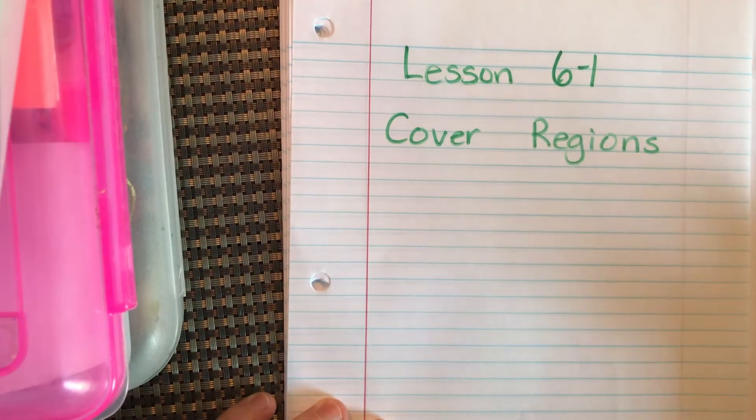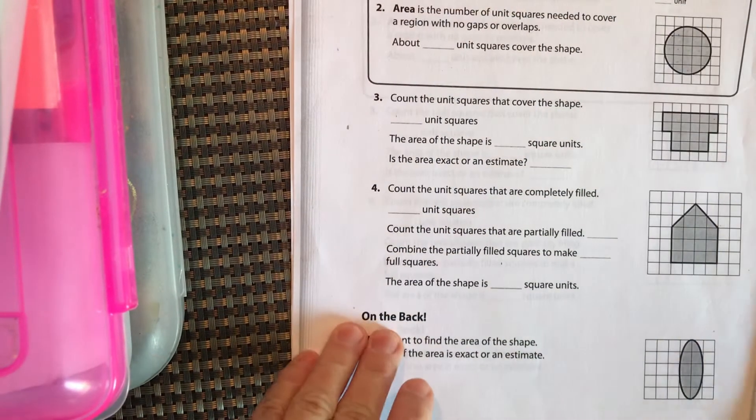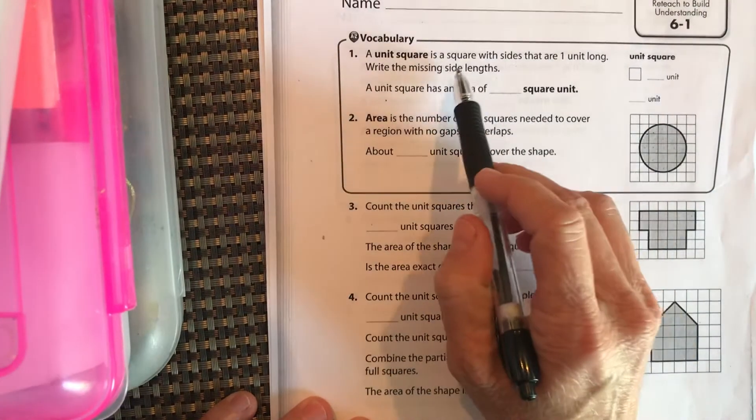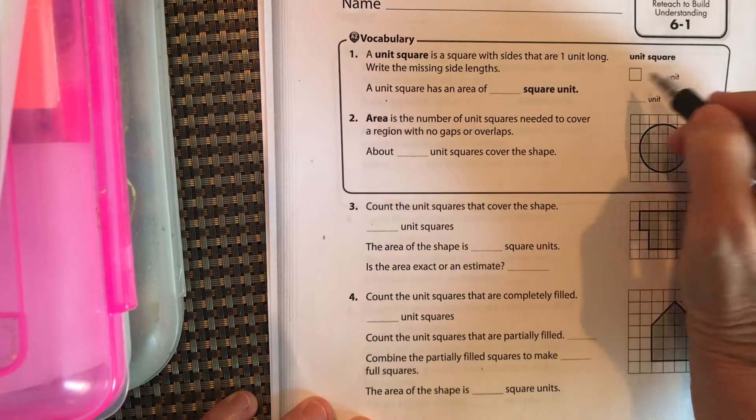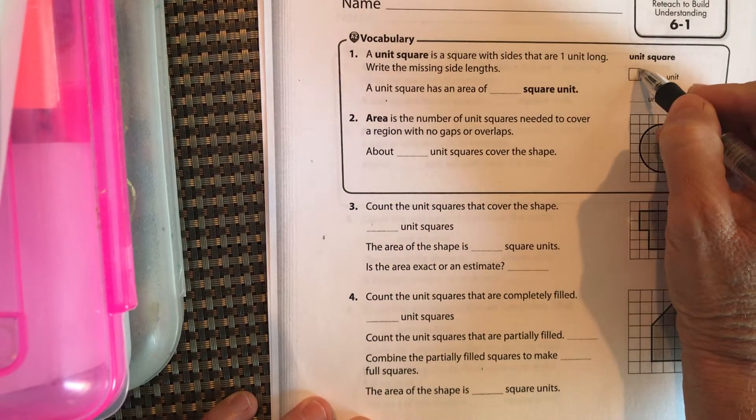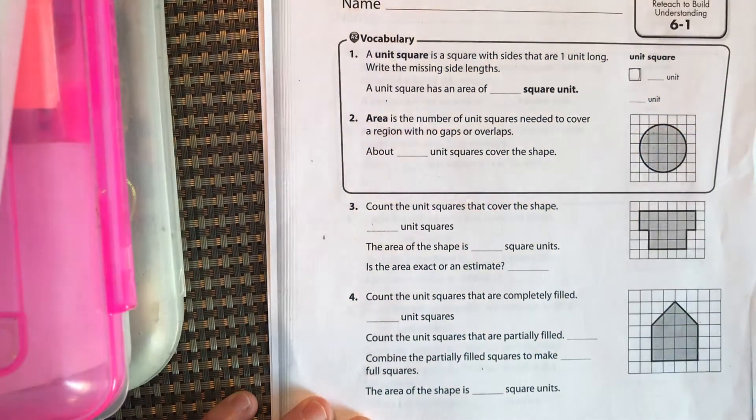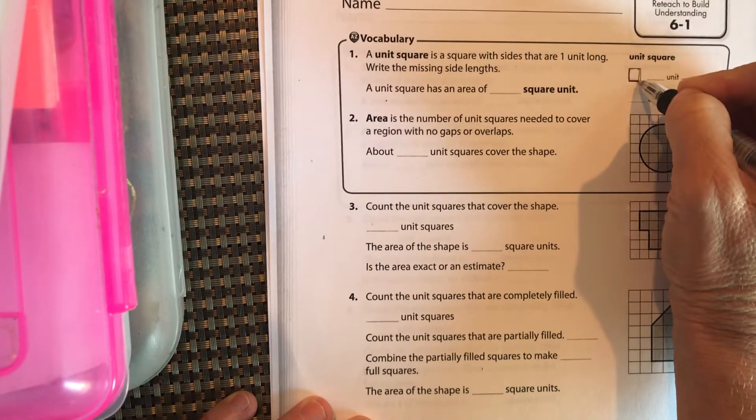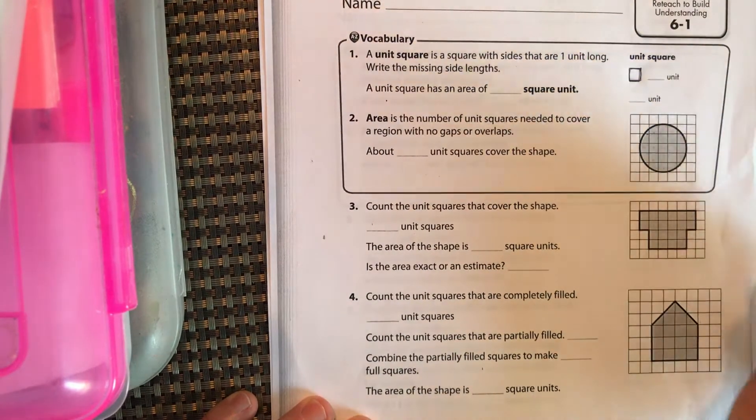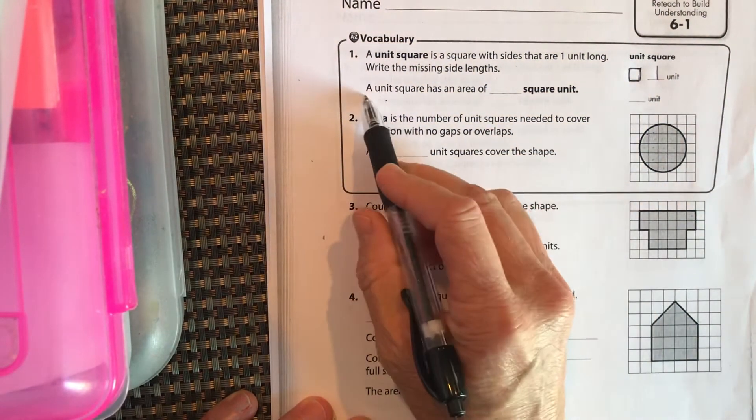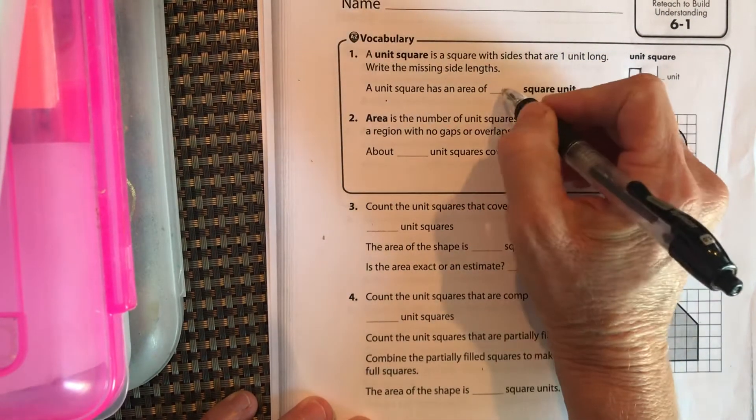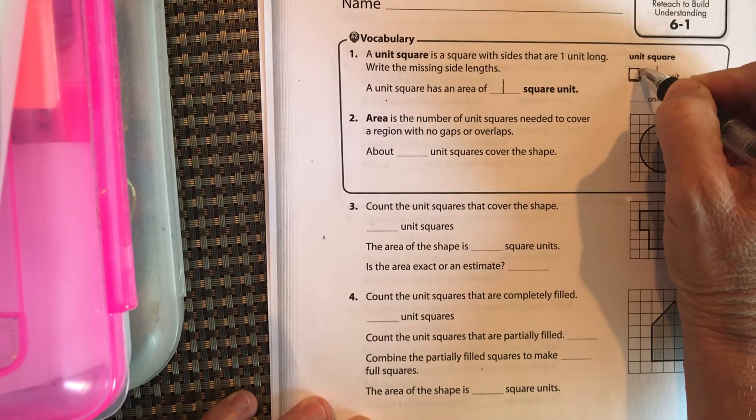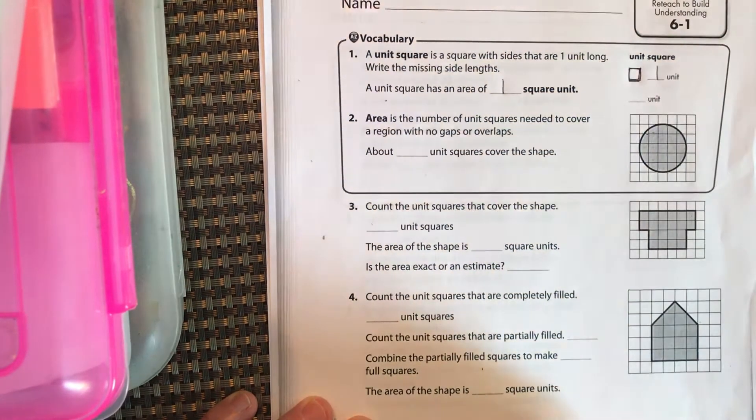Okay, lesson 6-1, cover regions. So a unit square is a square with sides that are each one unit long. It has to be a perfect square. You can't do unit squares with rectangles. It has to be a square where each side is the same distance. So this is one unit, and a unit square has an area of one square unit, which means I could basically cut out a shape that's this size and fill that with it.